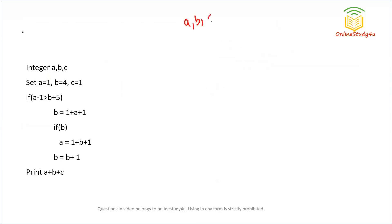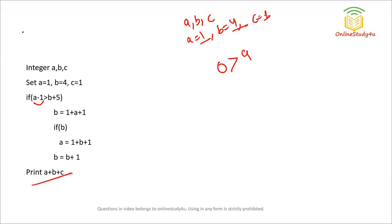Next question: three integers A=1, B=4, C=1. We check if A−1 > B+5, that is 0 > 9, which is false. So we don't enter the if block. At the end we simply print A + B + C = 1 + 4 + 1 = 6. So 6 is the correct answer.